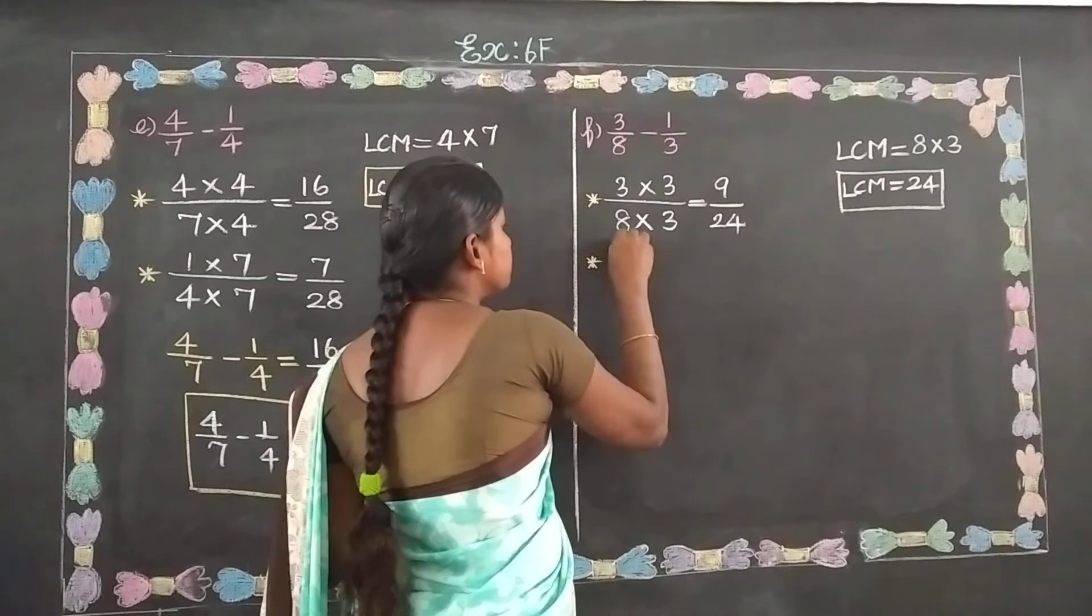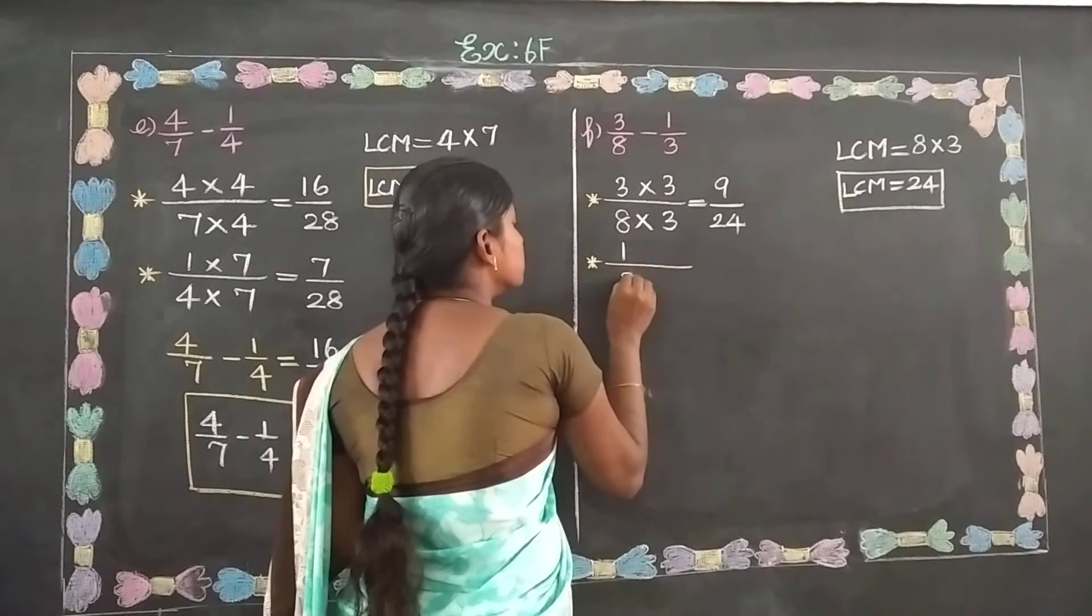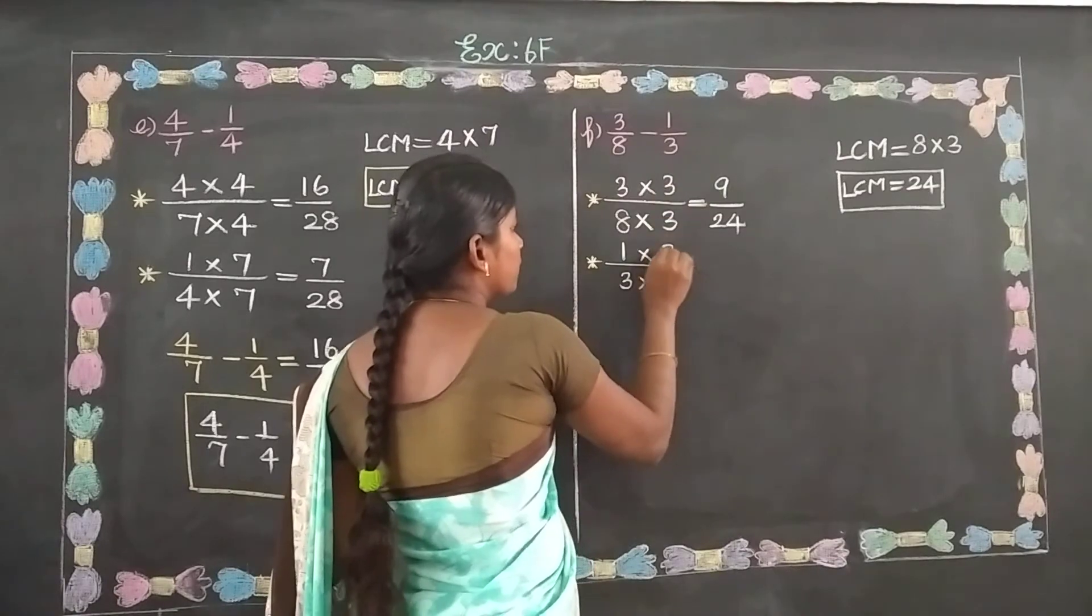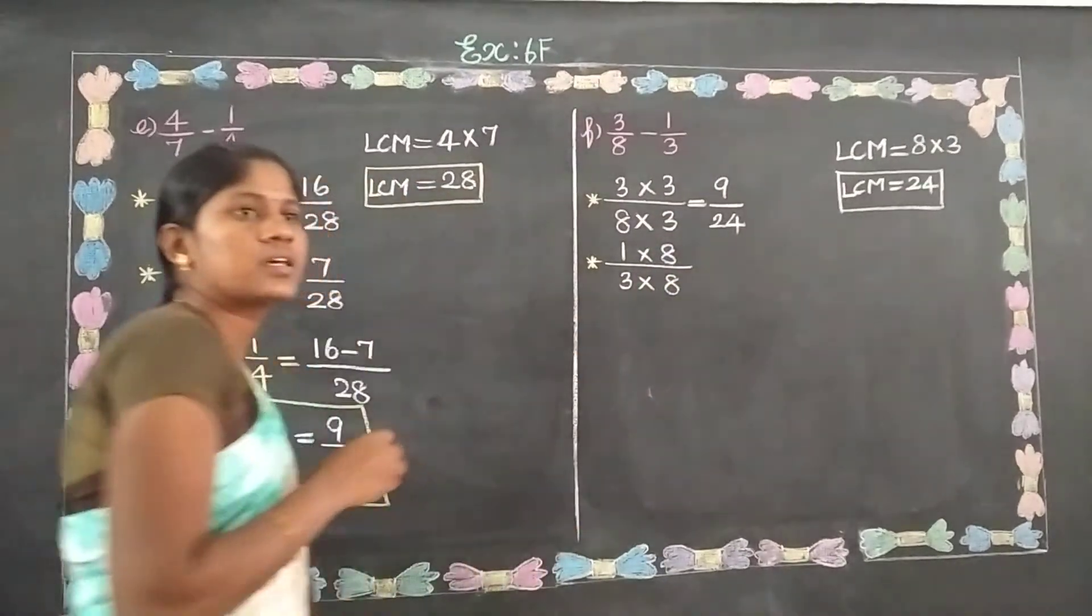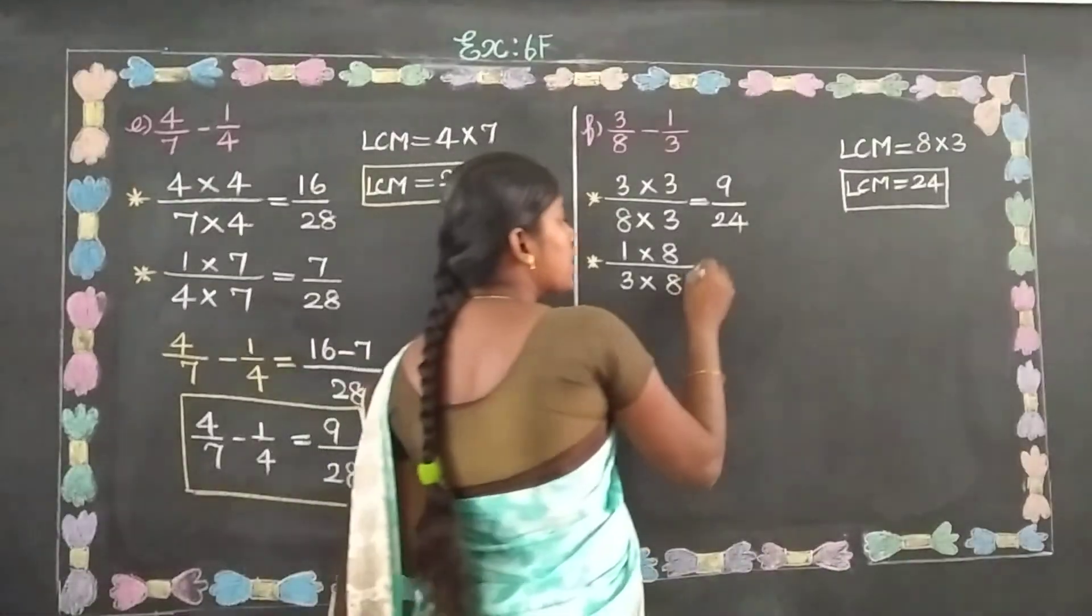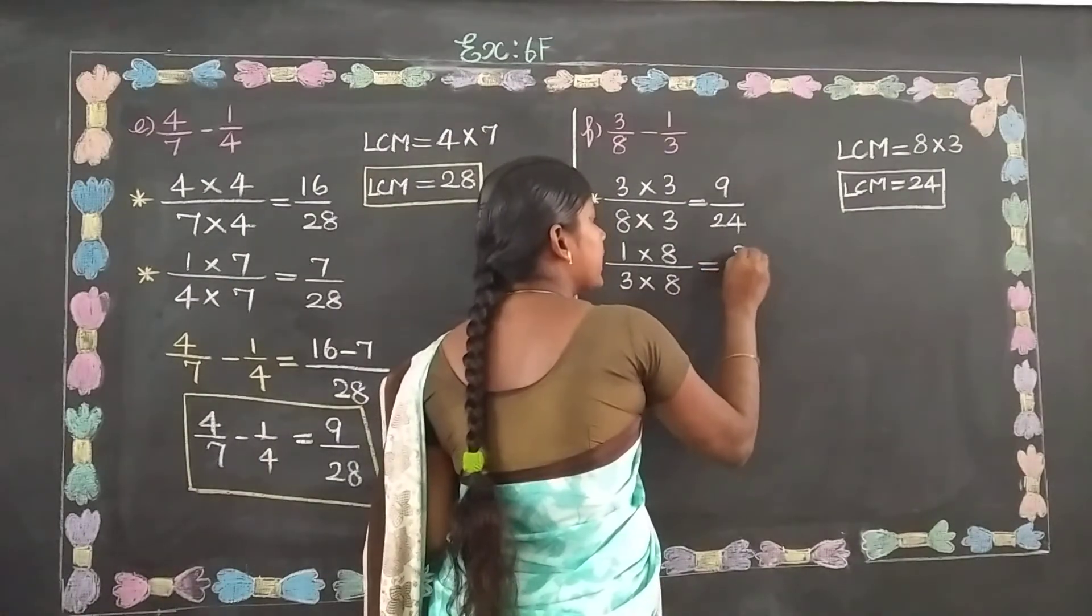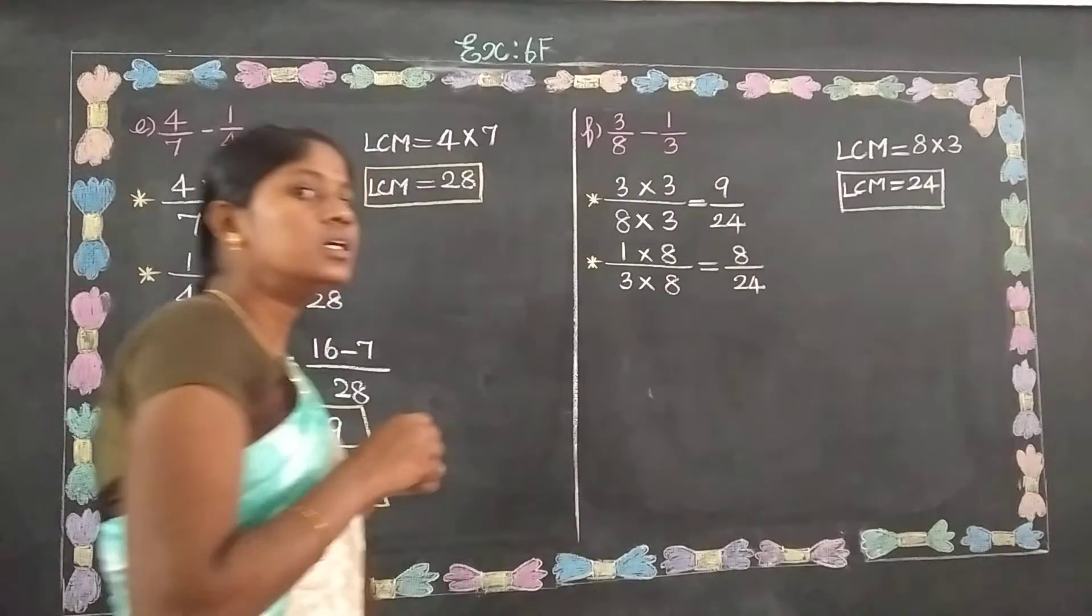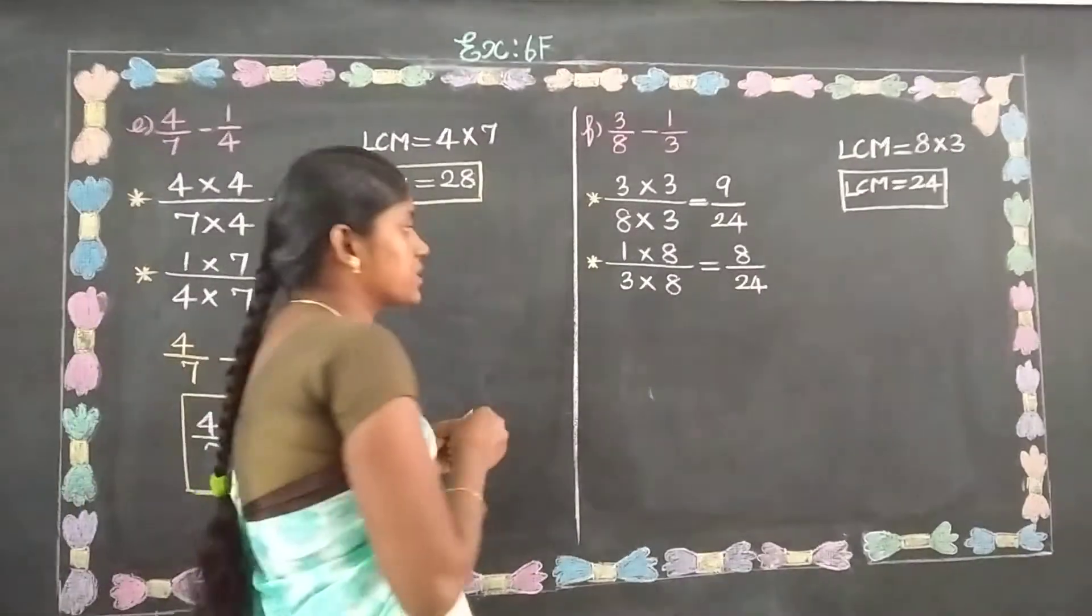And next, 1 by 3. LCM equals 24. This one, 8 times what is 8? So LCM equals 24. Let's calculate this.